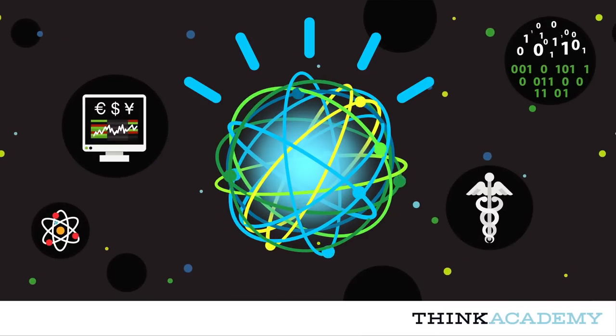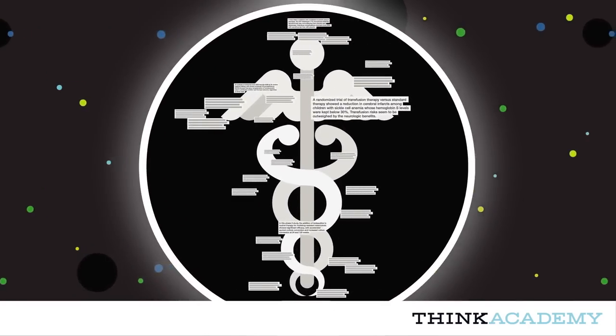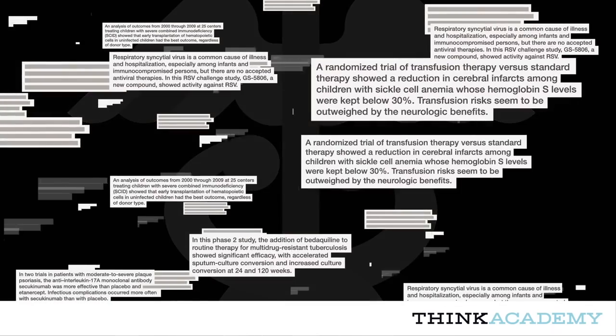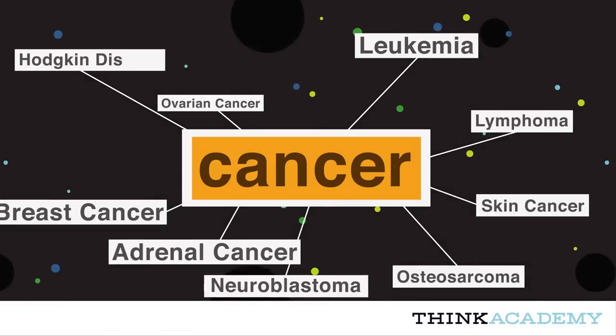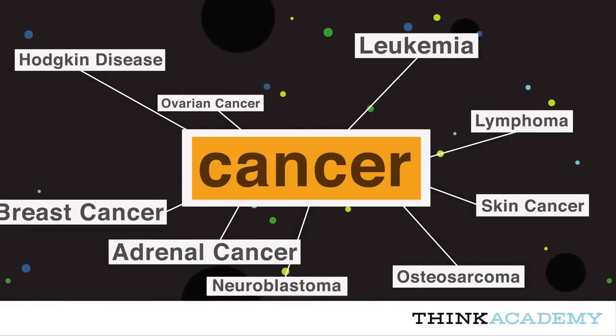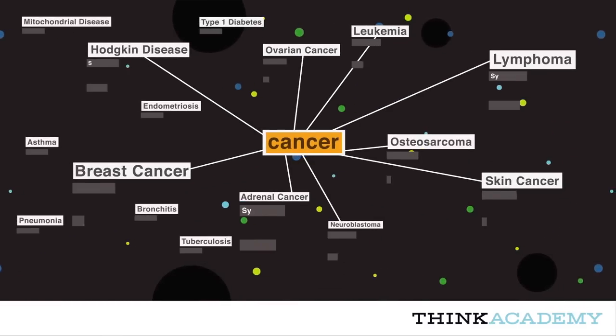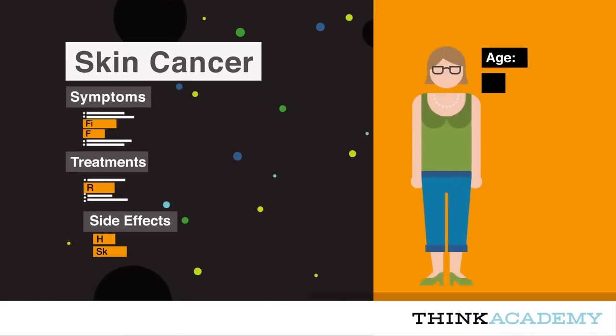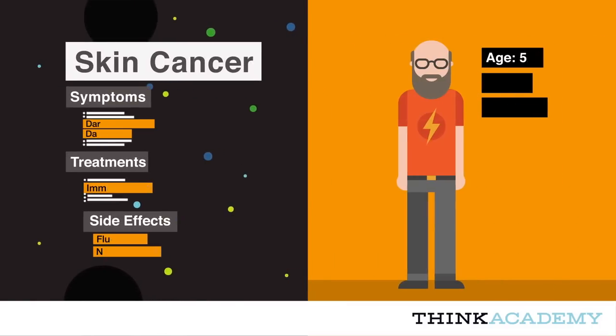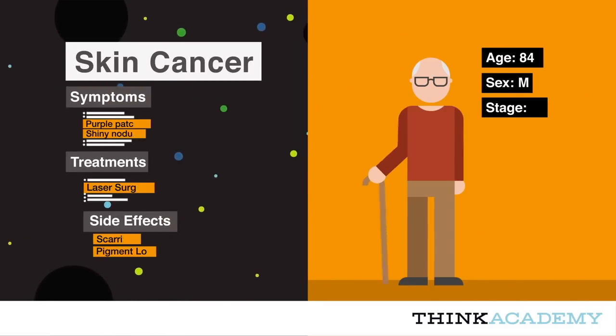When Watson goes to work in a particular field, it learns the language, the jargon, and the mode of thought of that domain. Take the term cancer, for instance. There are many different types of cancer, and each type has different symptoms and treatments. However, those symptoms can also be associated with diseases other than cancer. Treatments can have side effects and affect people differently depending on many factors.